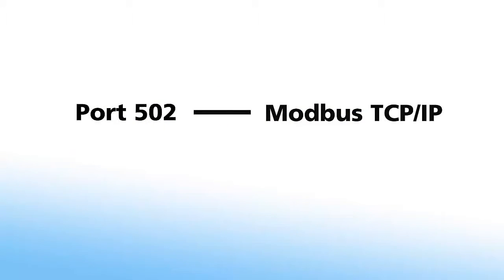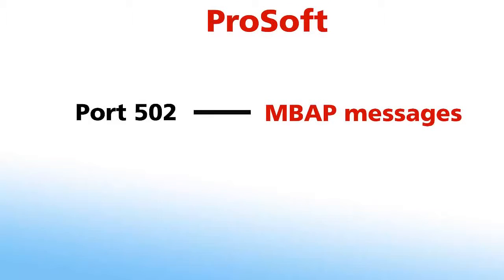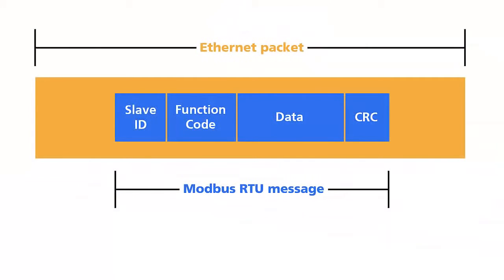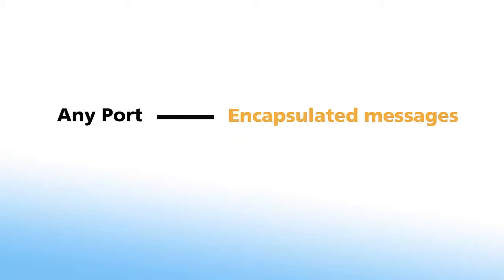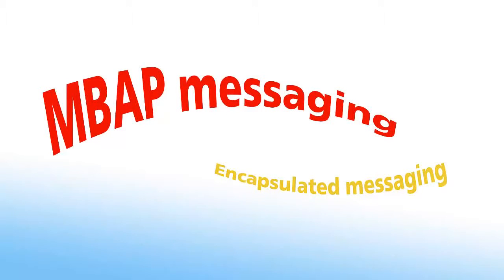Modbus uses port 502 for TCP IP communication. This is important if your data needs to go through a firewall. ProSoft uses that port for MBAP messaging specifically. Modbus serial messages can also be sent as regular RTU messages encapsulated inside an Ethernet TCP IP packet. Encapsulated messages can use any port, but ProSoft products are set to use port 2000 by default. Note that MBAP and RTU encapsulation are not compatible. Devices must be set to use one or the other.